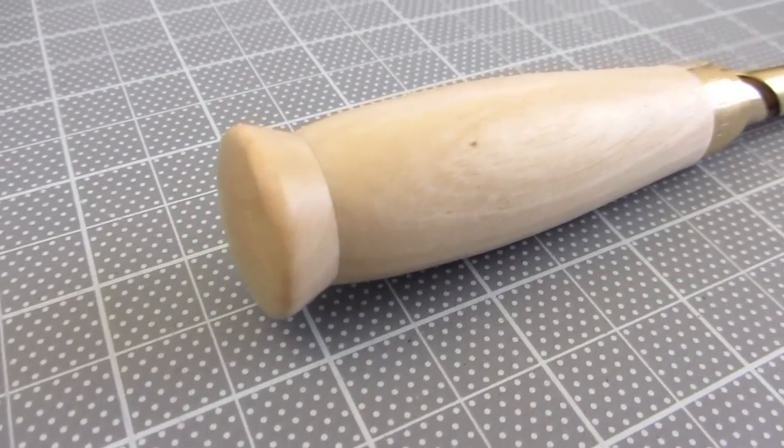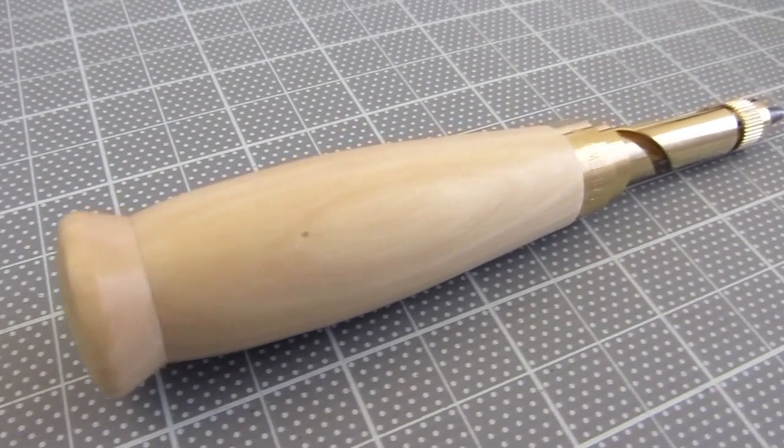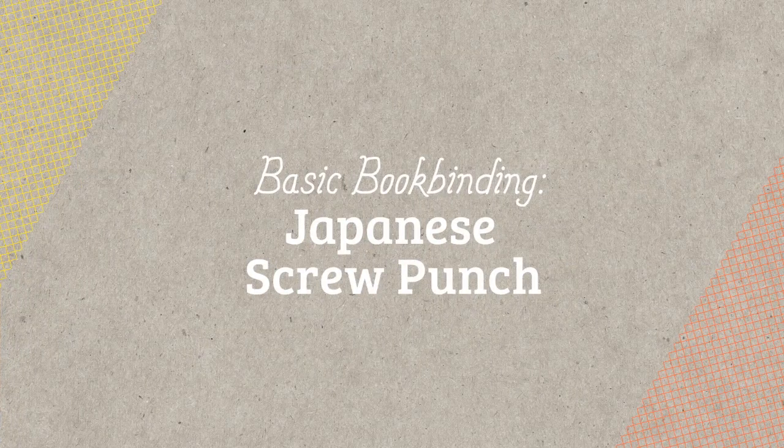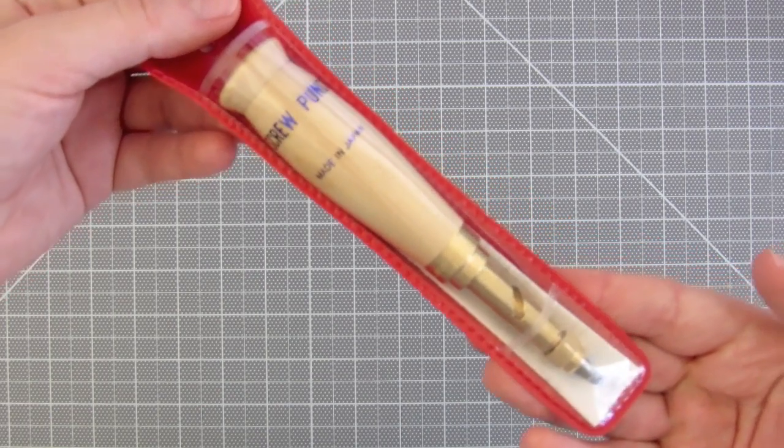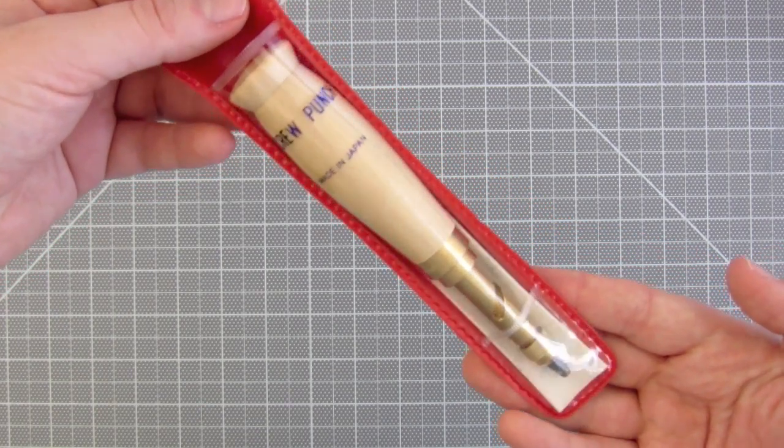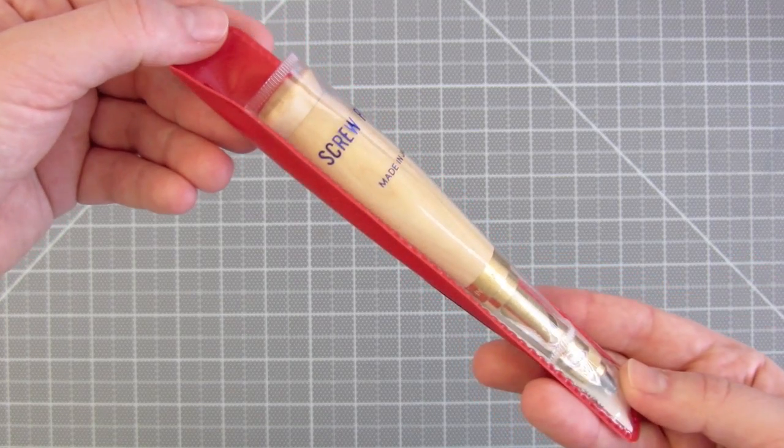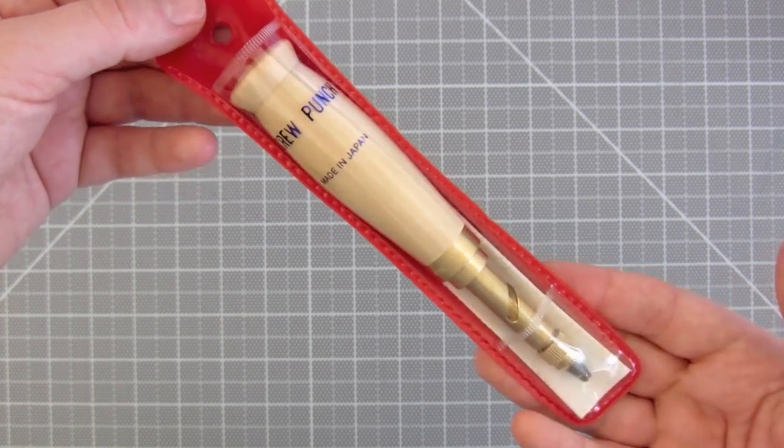In this video, I'm going to go over this Japanese screw punch. It's basically a tool that can make holes in paper, board, or leather, and it sometimes goes by the name of a book drill or paper punch.